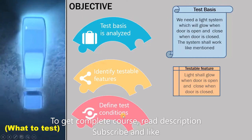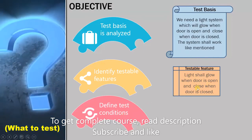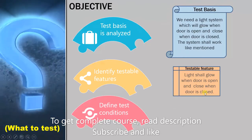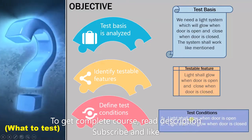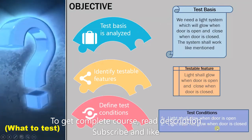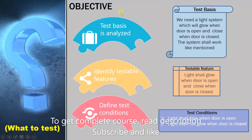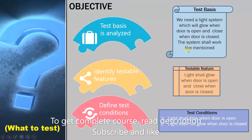We define test conditions. By looking at the testable features, we have to find out what we need to test in this. So we get these two conditions to test: light shall glow when door is open, and light shall not glow when the door is closed. We found what we have to test by analyzing the test basis or requirement.